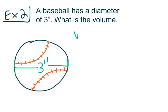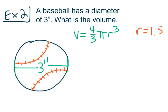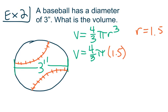The formula is V equals 4 thirds pi r cubed. If the diameter is 3 inches, that means the radius is 1.5 inches. We substitute 1.5 in for r, giving us V equals 4 thirds times pi times 1.5 cubed.